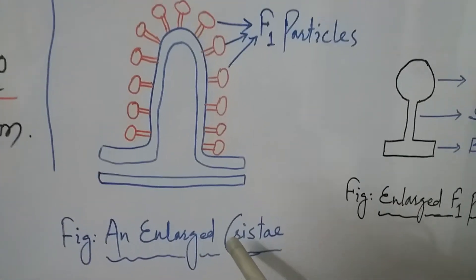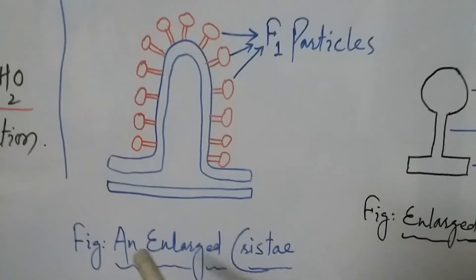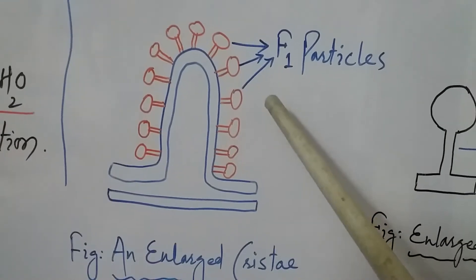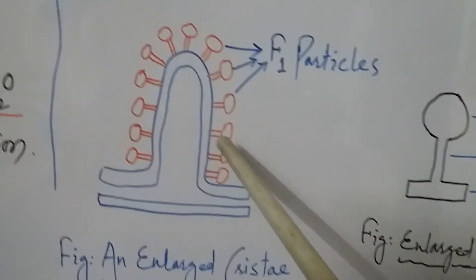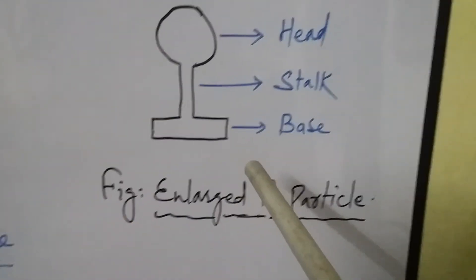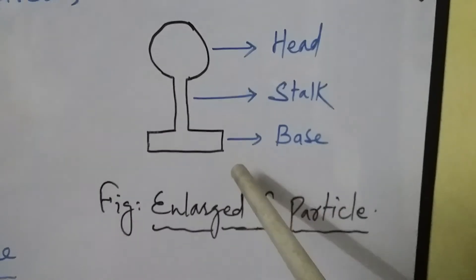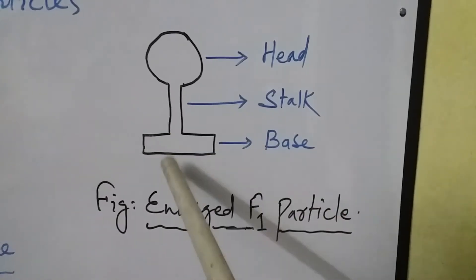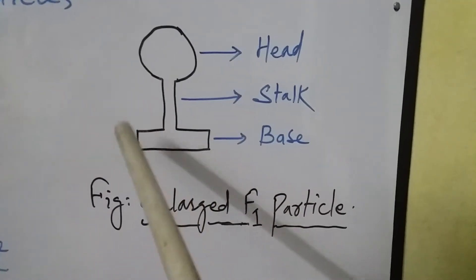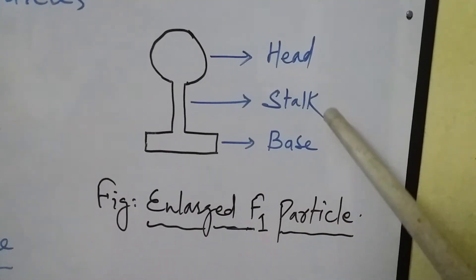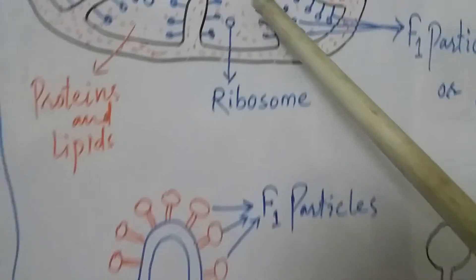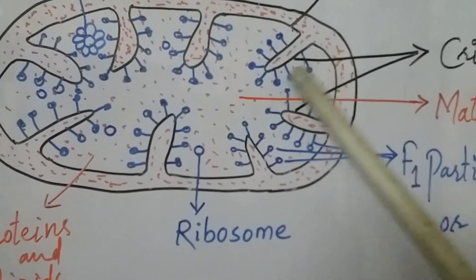If you enlarge the F1 particle on an enlarged crista, you can see it clearly. The enlarged F1 particle has three parts: a rounded head at the top, a stalk in the middle, and a base piece at the bottom. These F1 particles are present on the cristae, which are finger-like infoldings of the inner membrane of the mitochondria.